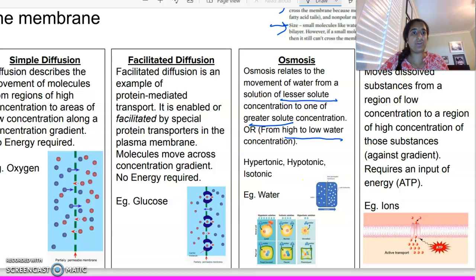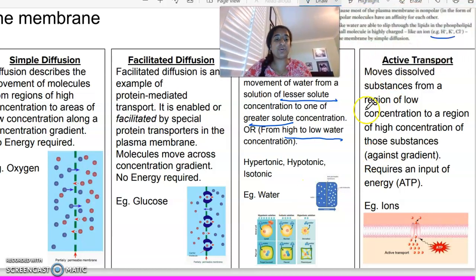The last method of transport is active transport, and that's for charged particles. That is against the concentration gradient, and we're moving now from a low to high concentration, and it requires energy. There is our summary. Any questions, leave them below. Thanks.